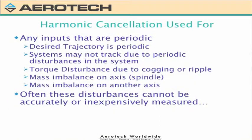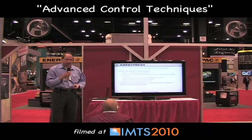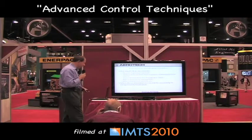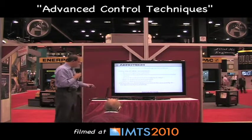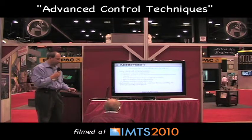Harmonic cancellation can be used any time you have a desired trajectory which is periodic, or some disturbance which is periodic in the system. A common one would be cogging or ripple torque in a motor, or a mass imbalance on a spindle. As you rotate that, you'll have some sinusoidal disturbance effect. Often these disturbances are not easily measured, or they're very expensive to measure, so you need some other technique for handling them.